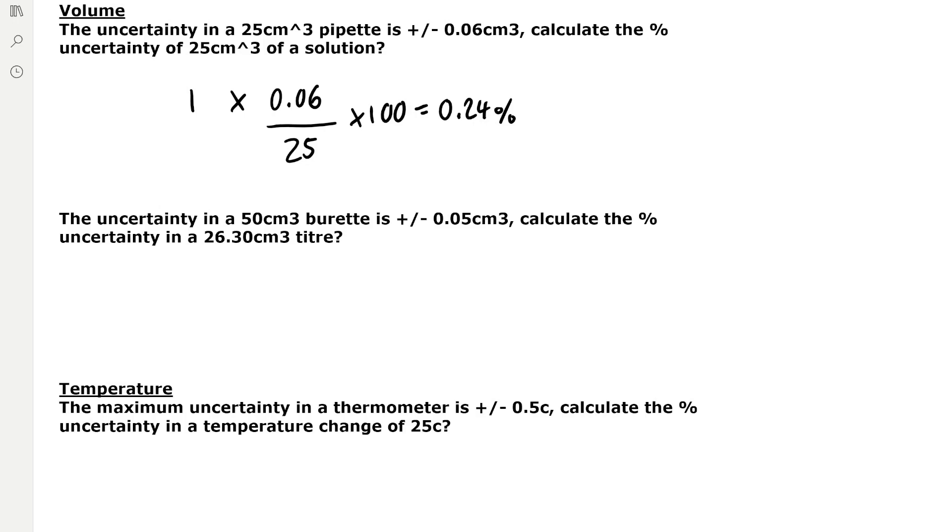So that means we're taking two readings. So we need to put that into our formula. So it's two times the uncertainty, which is 0.05 divided by the total volume, which is 26.3 centimeters cubed. And then we need to multiply by 100. And that gives us 0.38%.